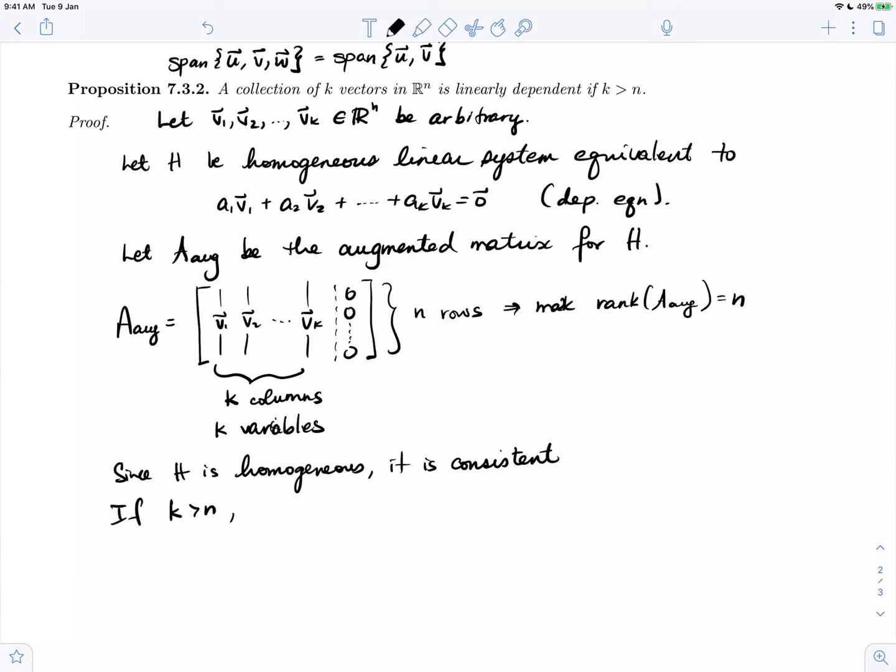If k is greater than n, well then, the number of variables which is equal to k is greater than n, which is the maximum rank of the augmented matrix.